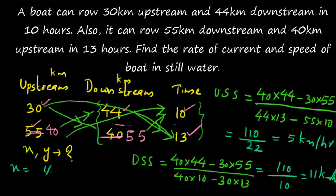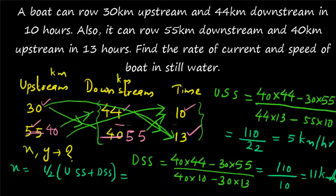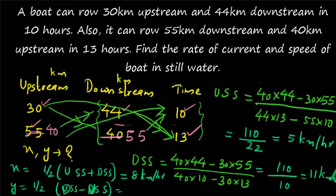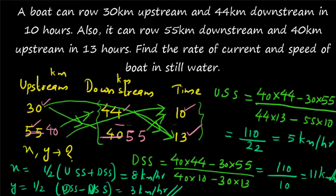Now we have upstream speed (USS = 5) and downstream speed (DSS = 11). X = ½ × (upstream speed + downstream speed) = ½ × (11 + 5) = ½ × 16 = 8 km/h. Y = ½ × (downstream speed − upstream speed) = ½ × (11 − 5) = ½ × 6 = 3 km/h. This is the final answer: rate of current = 3 km/h and speed of boat in still water = 8 km/h.